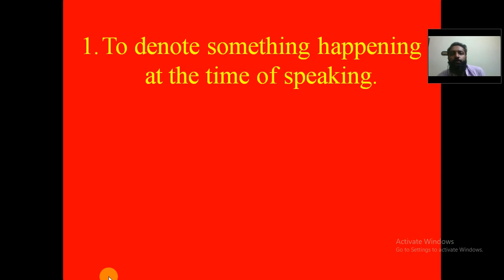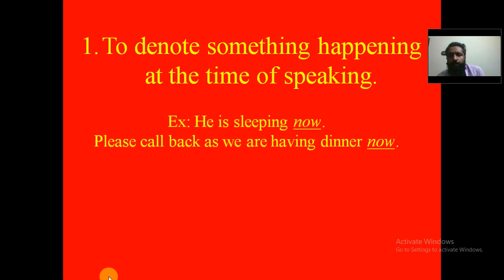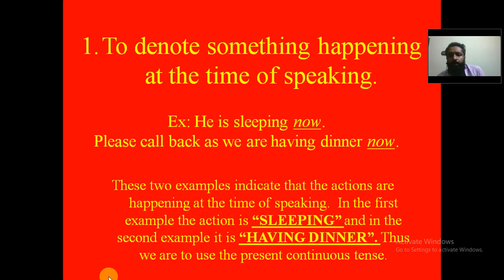The first usage of present continuous tense is to denote something happening at the time of speaking. Examples: 'He is sleeping now' and 'Please call back as we are having dinner now.' Both actions — sleeping and having dinner — are happening at the time of speaking, so we use the present continuous tense.